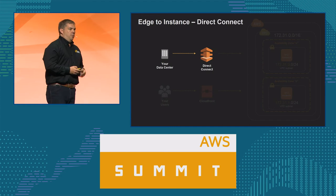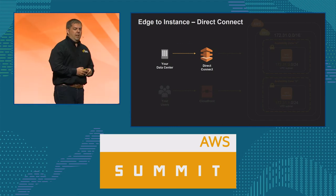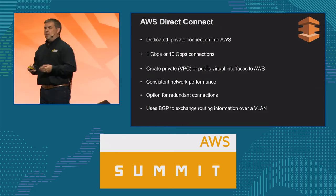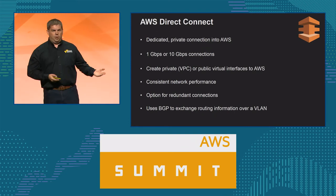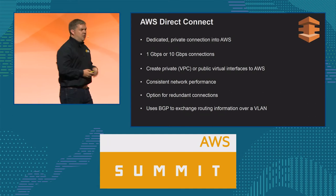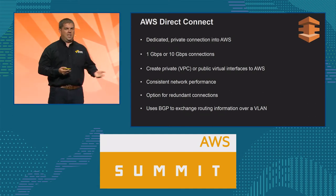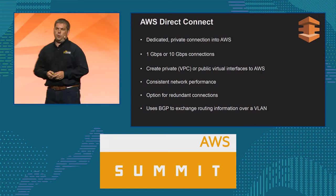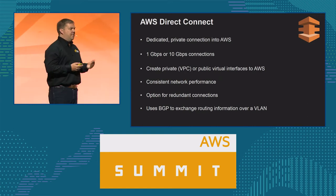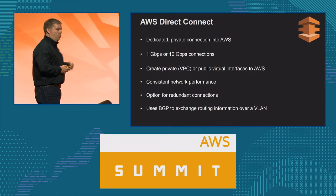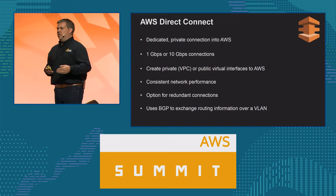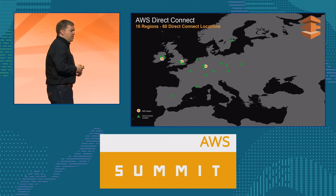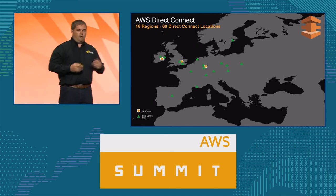Let's start with connectivity from your data center into AWS. What is Direct Connect? It's a service that enables you to establish a dedicated private connection from your network into AWS. You can provision 1 gig or 10 gig connections, or multiples thereof, into various Direct Connect locations around the world, which are then associated with our AWS regions. They enable connectivity into your VPC or to our other public services, with consistent network performance and high bandwidth. We currently have 16 regions and 60 Direct Connect locations around the world.